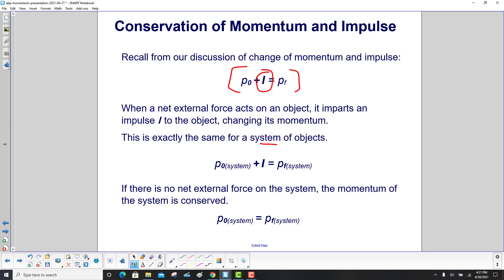This is exactly the same for a system of objects. If there is no external force on the system, the momentum of the system is conserved and the initial momentum will equal the final momentum.